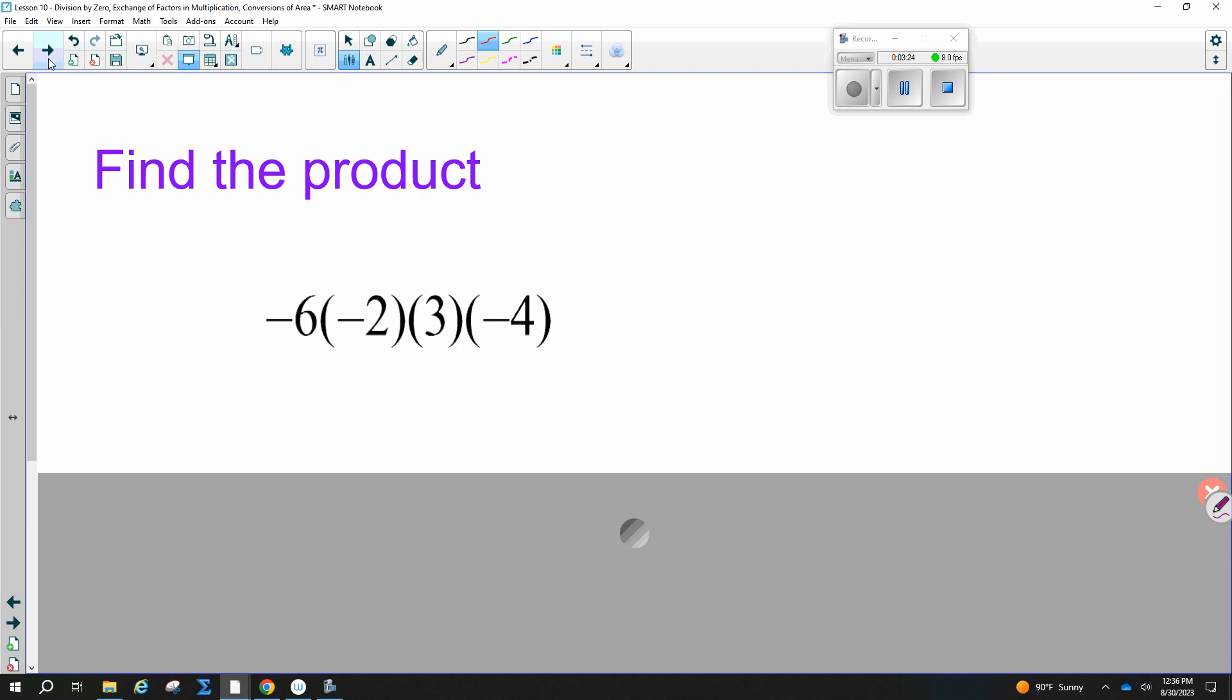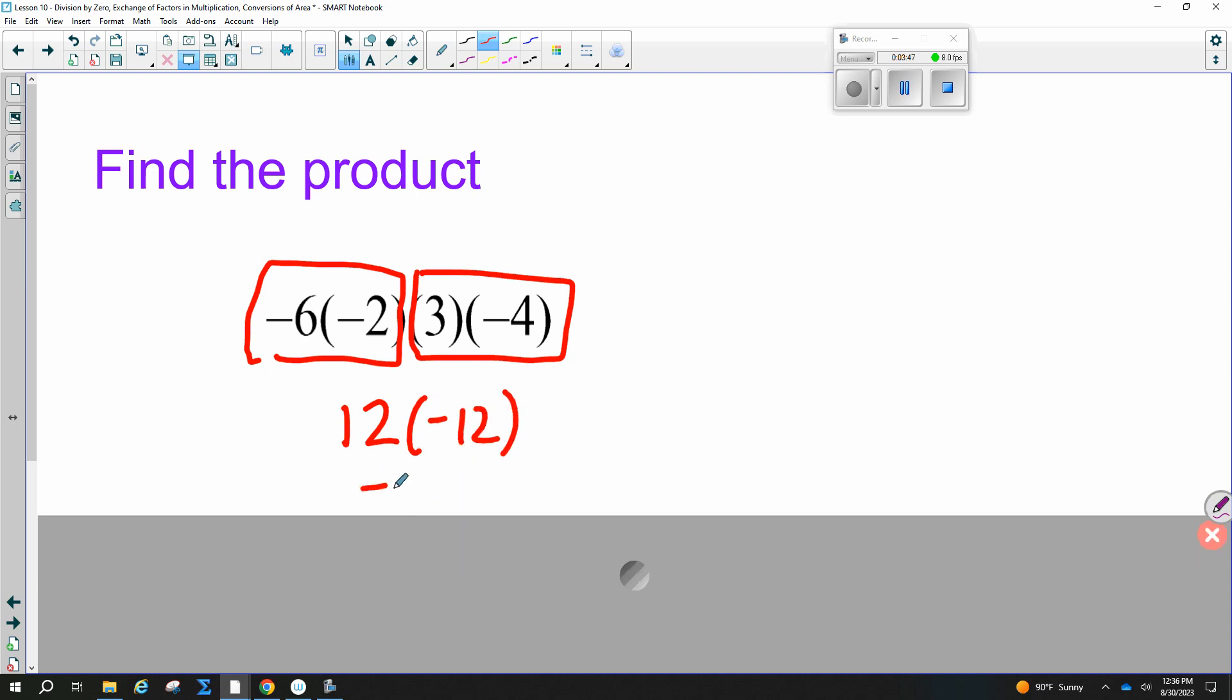Find the product. So you can multiply these however you want. You might want to show some work. So let's say I multiply these two together first. What do I get? 12. And then let's say I multiply these two together. What do I get? And then I can multiply those together to get negative 144. So multiply in whatever order you want.